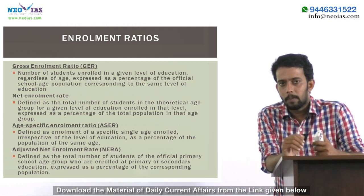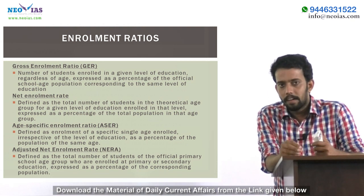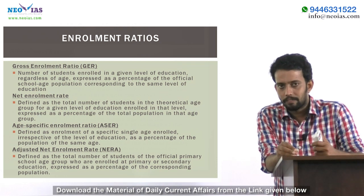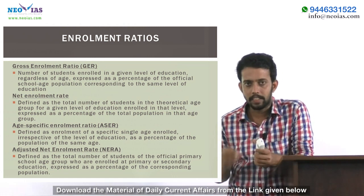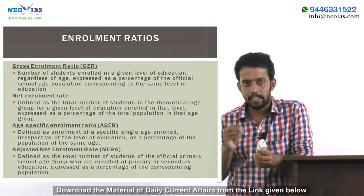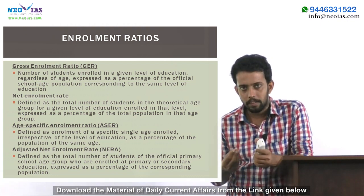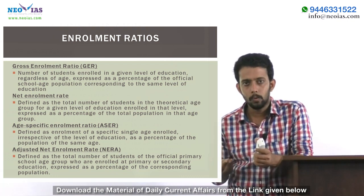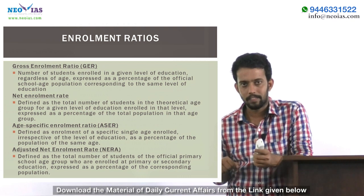Gross Enrollment Ratio is the number of students enrolled in a specific grade level regardless of age, divided by the total number of students at that age level. Suppose a village has 1000 students aged seven and the number of students enrolled in the corresponding level, that's Grade 2, is 100. Gross Enrollment Ratio will be 100 divided by 1000, that's 10 percent.